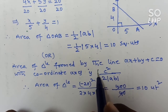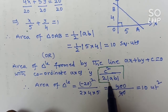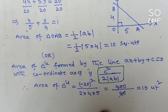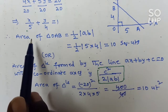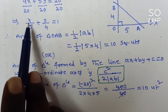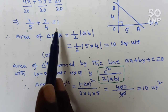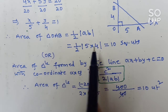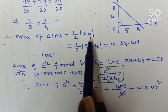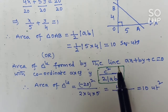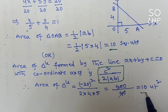So directly you can find the area of the triangle using the formula C² divided by 2 into modulus of AB. This is the direct formula. Otherwise, if you forget this, when any line forms a triangle with the coordinate axis, convert it to intercept form x/A plus y/B equals 1, then apply one-half times modulus of the product of x-intercept and y-intercept. Both methods give 10 as the answer.